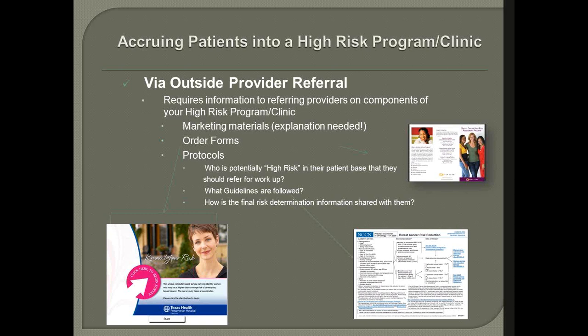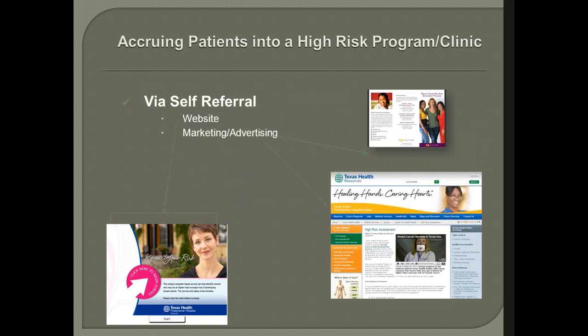Make the accrual process use approved models that your team has clinically validated, but make them as accessible as possible to accrue as many appropriate patients as are out there. Make sure outside providers understand your protocols so that they know who in their patient base is potentially at high risk, what you're going to do with those patients, and that NCCN guidelines will be followed. Share information back with them about what happens to the patient after they come into your high-risk program, are evaluated, provided with interventions, and are ready for surveillance. For self-referral, you need a great website that talks about how to become a high-risk patient in your program and how to receive your assessment.